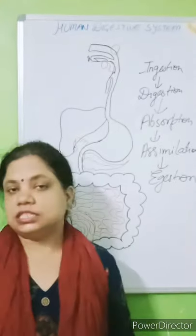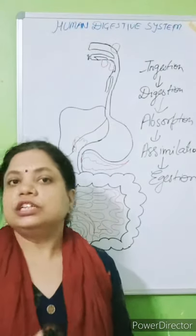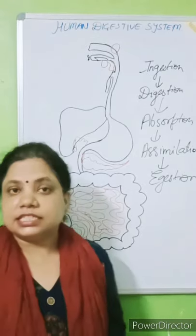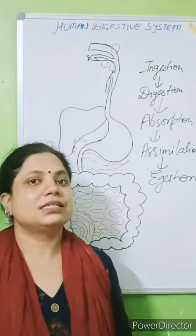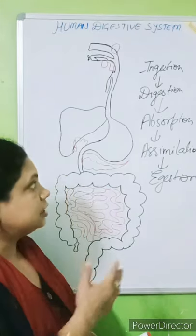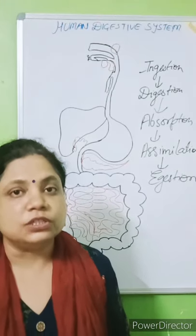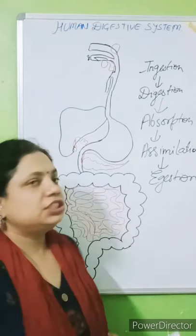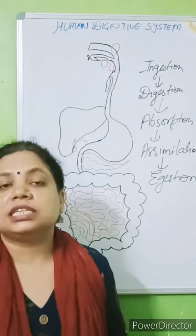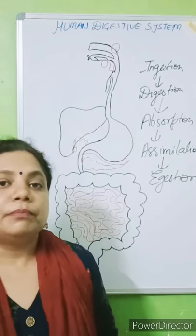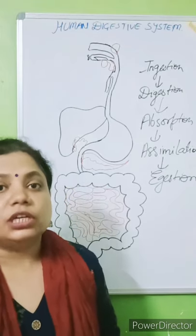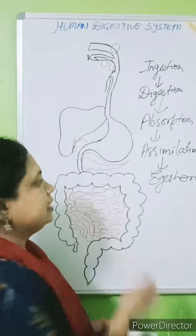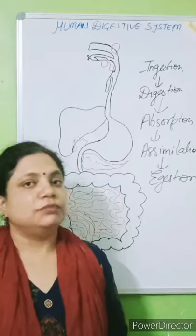Let's discuss the role of these steps. Ingestion means the taking of food through the mouth. Digestion is the process where complex substances break down into simpler substances. Absorption is where the digested food passes through the intestinal wall and enters into the bloodstream. Assimilation is where the absorbed food is taken by our body to provide energy, growth, and repairing of body cells. And egestion is where undigested food is removed from our body.